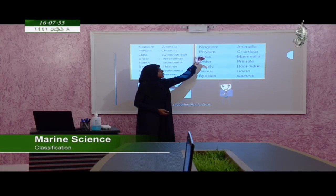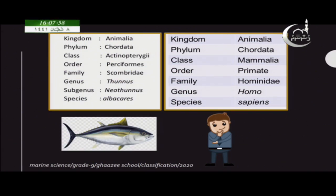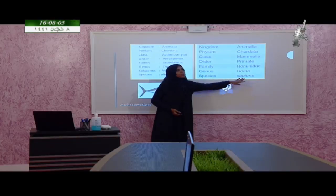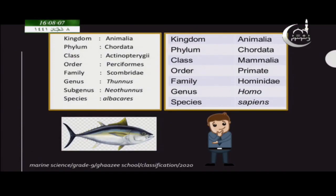All organisms having backbones come under phylum Chordata. Then the class — we are class Mammalia. That way it goes up to species. The last two names — the genus name and species name — are actually the scientific name for that particular organism.